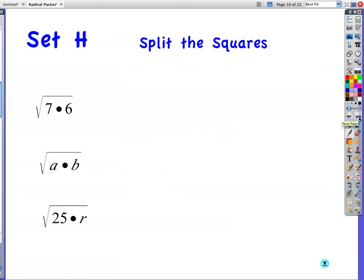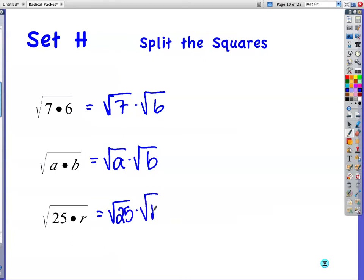Set H. Split it. This is like a skill. You probably have drills or skills that you work on in basketball. This would be kind of like a skill. You're not going to do this very often. Write it out separately. Square root of 7 times the square root of 6. We're just working on this skill. I want you to realize when you have a radical with several things underneath it, you can split it. It's okay to split it. So now I have square root of 25 times the square root of R. But wait, the square root of 25 is 5. The square root of R is just the square root of R.